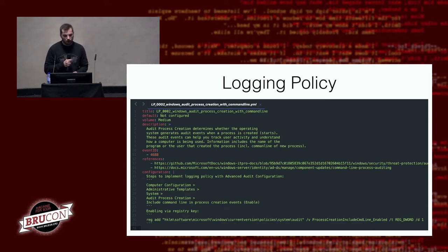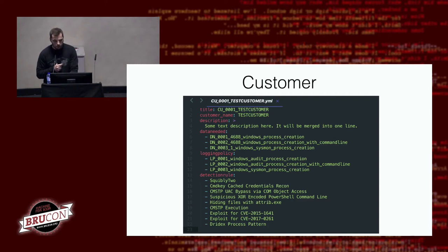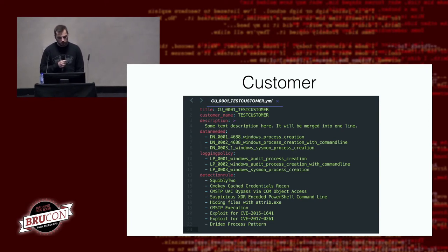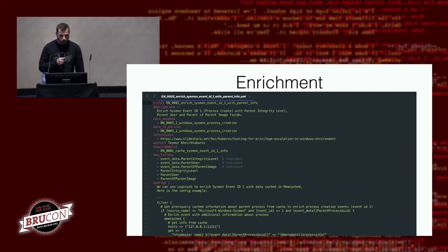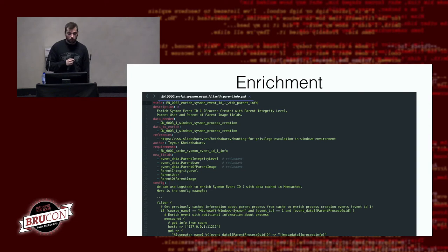When it comes to a security operation center, especially for managed service providers, you may want to track what you are collecting and what is implemented per customer. There is another simple entity for tracking this. For internal security teams, this might be a group of hosts or a specific server. If you want to go further, you may want to enrich the data, and to store information about how to do this, we also have enrichment entities. These include a description, requirements for the enrichment, any new fields added, and the configuration needed.